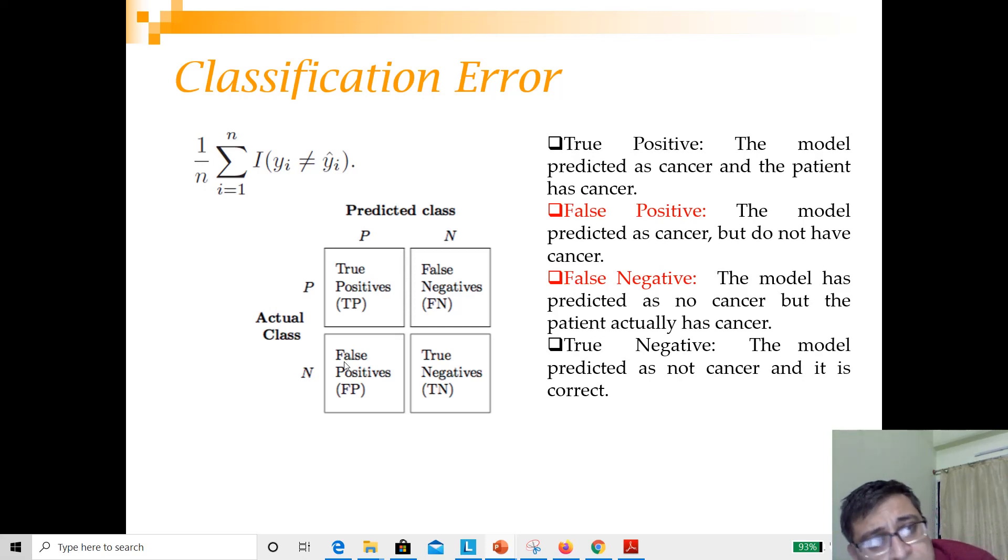For those listening for the first time, the terminology may be a little difficult. What I'll tell you is that the quadrants are described using two words. The second word corresponds to the prediction. You see that when the column is positive, both cases have the second word as positive. What you're telling is that you predicted it as positive class, but it is false in one case and true in the other. That's how you can remember this.